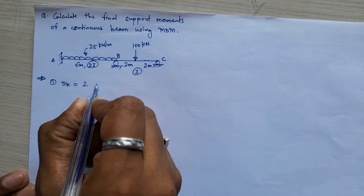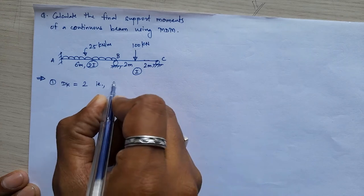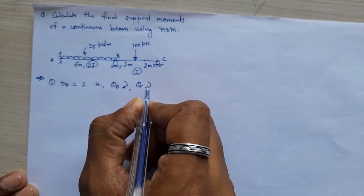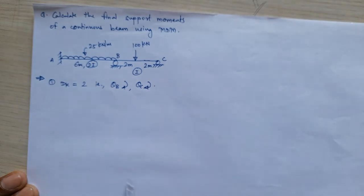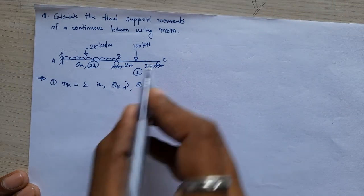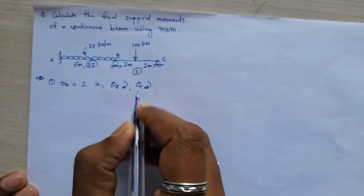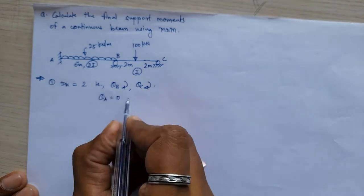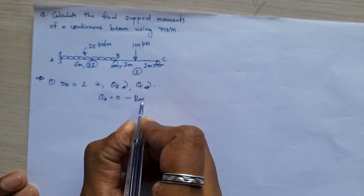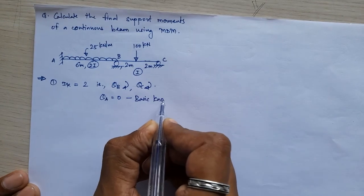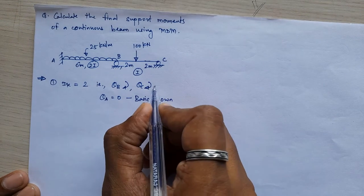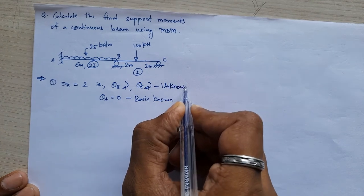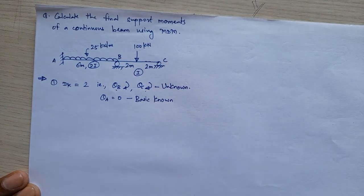So these two — theta B and theta C — will be my basic unknowns. The basic known value is theta A, which equals 0. So theta A is my basic known, while theta B and theta C are my basic unknowns which we have to calculate.